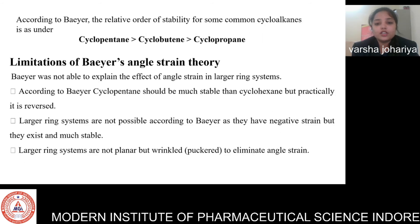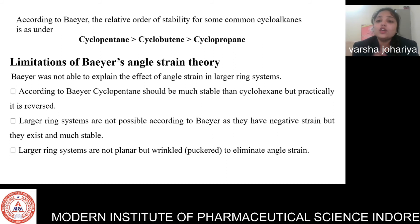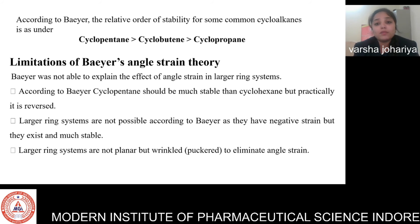Limitations of Bayer's Strain Theory: Bayer was not able to explain the angular strain in larger ring systems. Among cyclopentane, cyclobutane, and cyclopropane, cyclopropane has the most angular strain, making it the most unstable and highly reactive, showing ring-opening addition reactions. For cyclohexane, the angular strain is negative, so the compound is more stable and does not readily show ring-opening reactions.